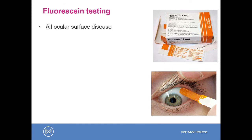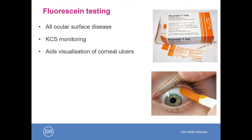Fluorescein staining should be performed in all cases of ocular surface disease including dry eye, and also in monitoring of dry eye. The most common indication for fluorescein is in the visualization of corneal ulcers, but it also has other applications such as assessing aqueous humor leakage if there is a concern about perforation of the eye, and also performing what's known as the tear film breakup time.